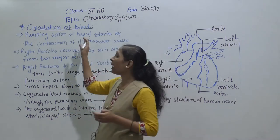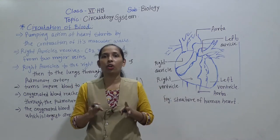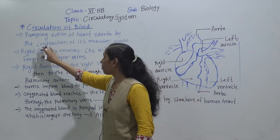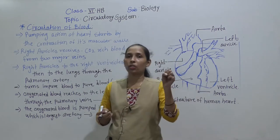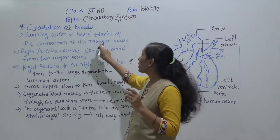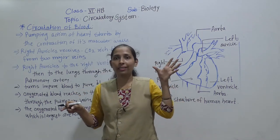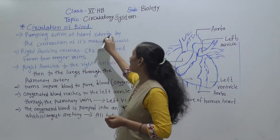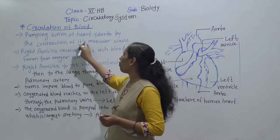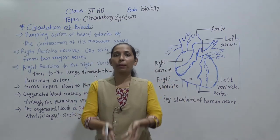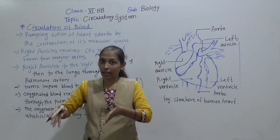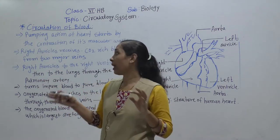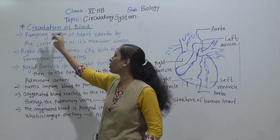The pumping action of the heart starts with the contraction of its muscular wall. Because of this contraction, blood gets pumped out. The contraction and relaxation of the heart is continuous throughout life, and because of this, the circulation of blood goes on in the body.